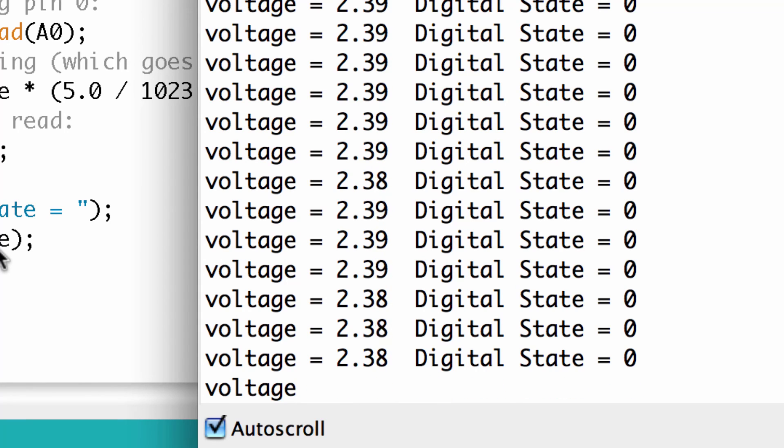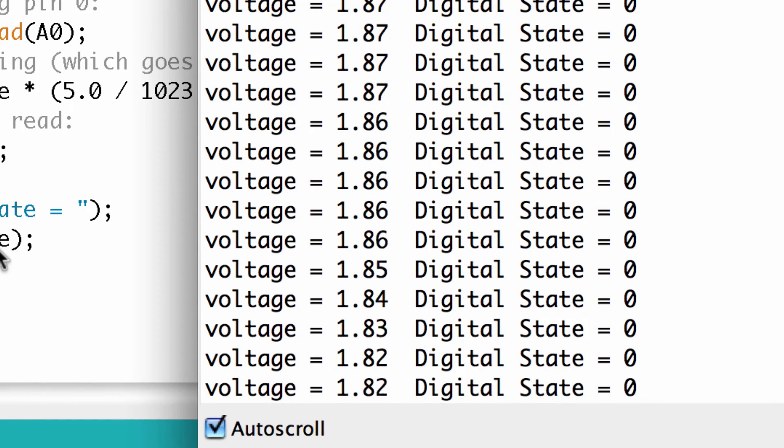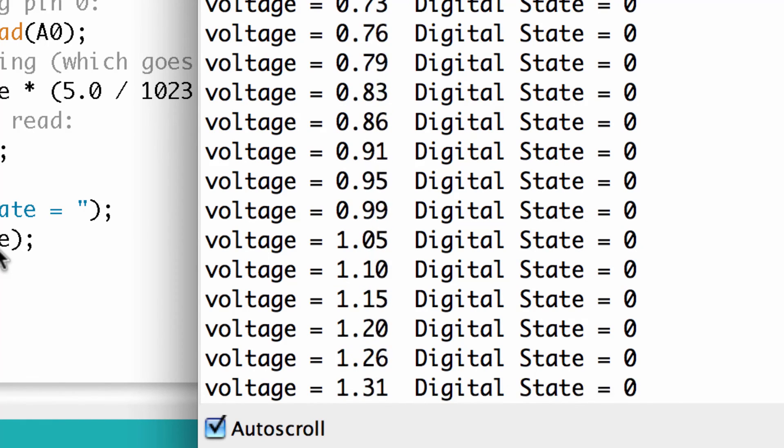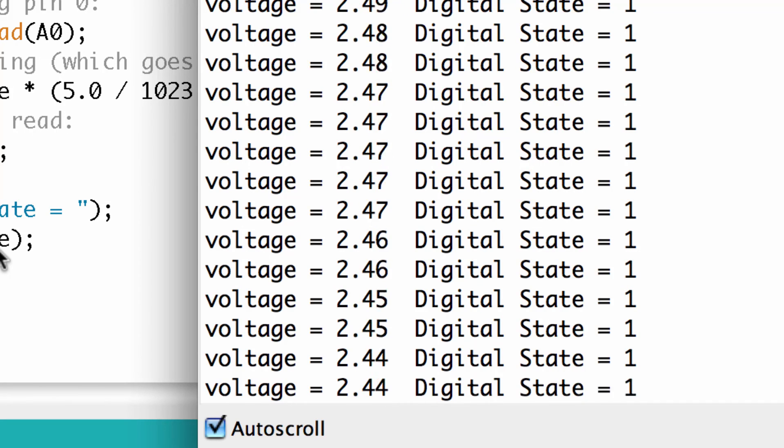So let's keep going down low. At 1.5 is where we said we could be guaranteed to have a low. And we are definitely a low at 1.5. I can keep going down to zero and you can see that that digital state is zero. So as I come back up, let's go right in the middle and see what is that cutoff between low and high.